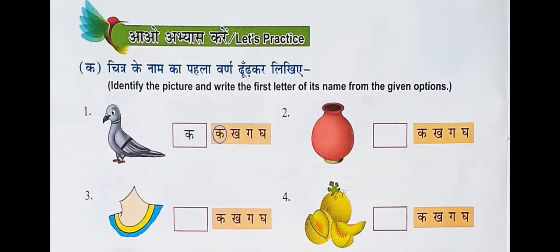This is the first exercise. You are going to identify the picture and write the first letter of the picture, and you have to circle the correct letter in the given option also. There are four letters given in the box — you have to identify which letter is correct, circle it, and write it in the box.